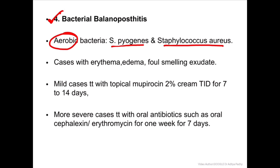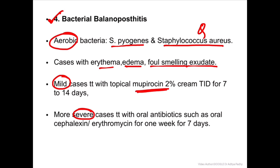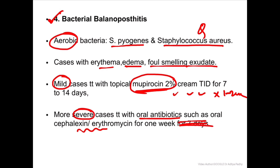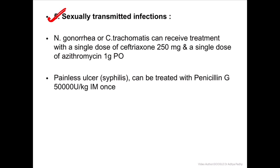The fourth type is bacterial balanoposthritis. Aerobic bacteria like Streptococcus pyogenes and Staphylococcus aureus can cause this, presenting with erythema, edema, and foul-smelling exudate. In mild cases, mupirocin two percent cream should be applied twice daily for one to two weeks. In severe cases, oral antibiotics like erythromycin or cephalexin should be given for one week.